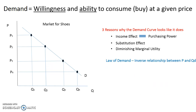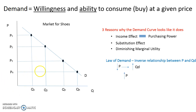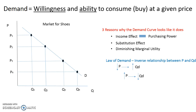The next thing is the law of demand. The law of demand is this inverse or negative relationship between price and quantity demanded. As price is going down, quantity demanded is going up. The converse is also true: as price goes up from P2 to P1, the quantity demanded is going down. As price goes from P4 to P3, the quantity demanded is going up. So again, you have this negative or inverse relationship between price and quantity demanded.